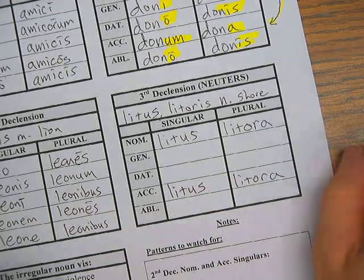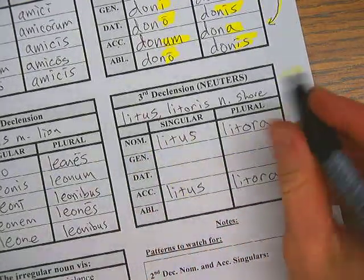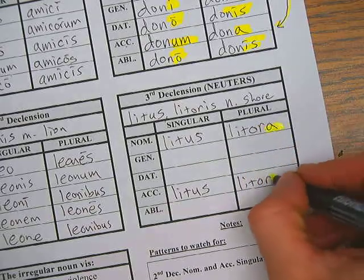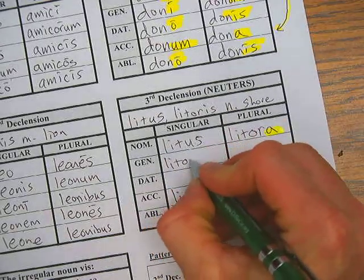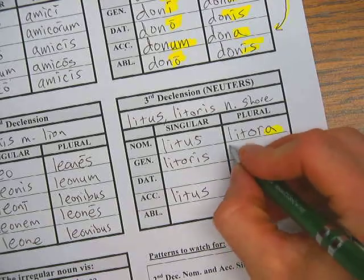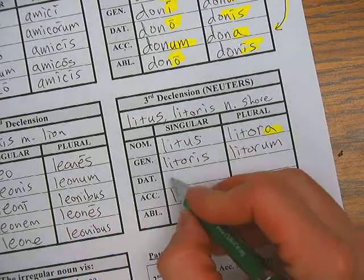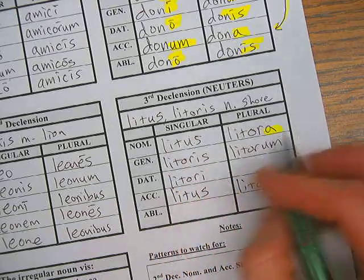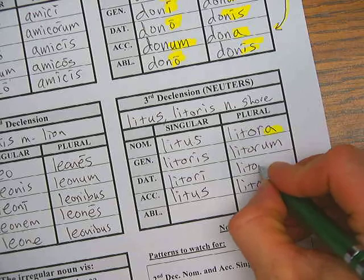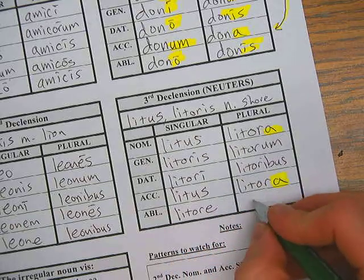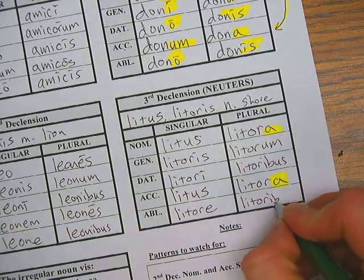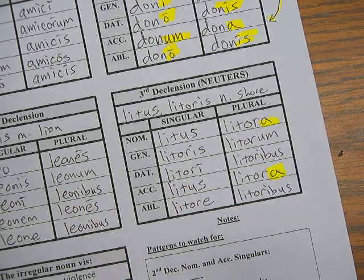So leetus and leetus, and leetora and leetora — those are also the same. We don't really say that these have an ending — you just put the form there, but these have an ending. And then everything else is the same: leetoris like leonis, leetorum like leonum, leetori like leoni, and leetoribus like leonibus, and leetore and leetoribus. We do the same, like so. That's third declension neuters.